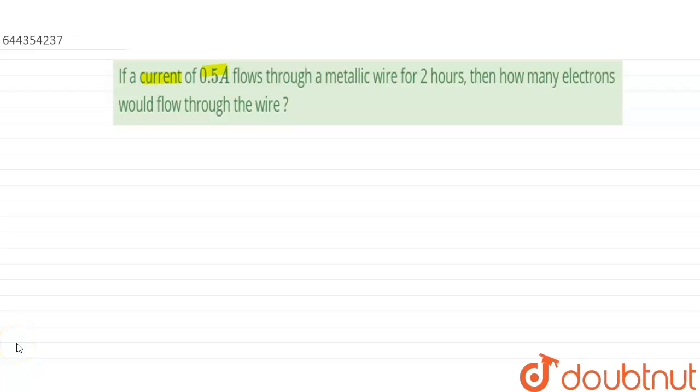Hello everyone. The question is: if a current of 0.5 ampere flows through a metallic wire for two hours, then how many electrons would flow through the wire?